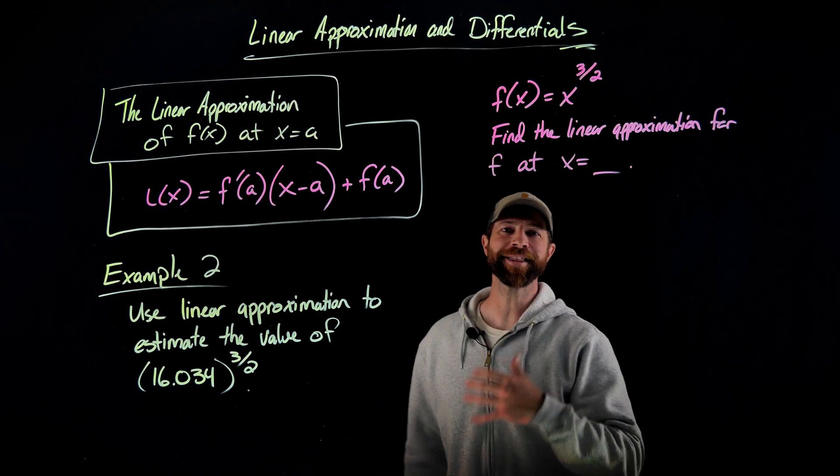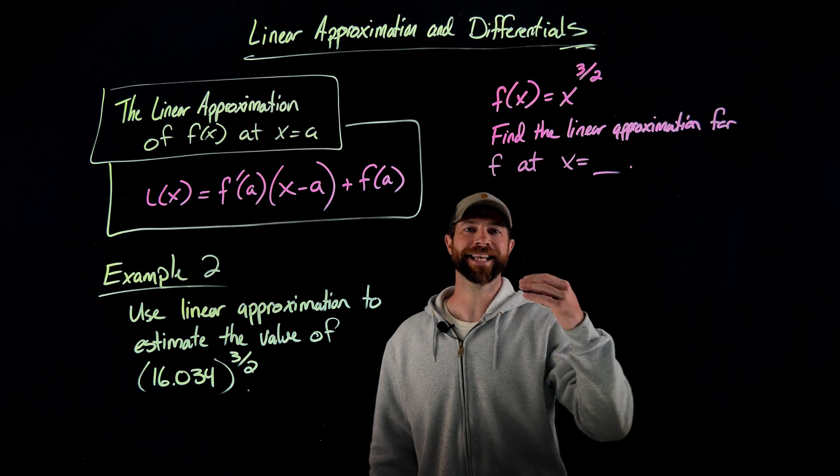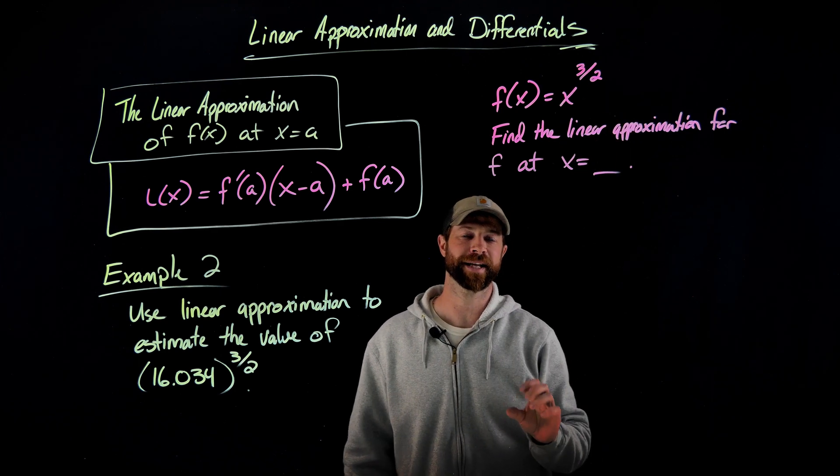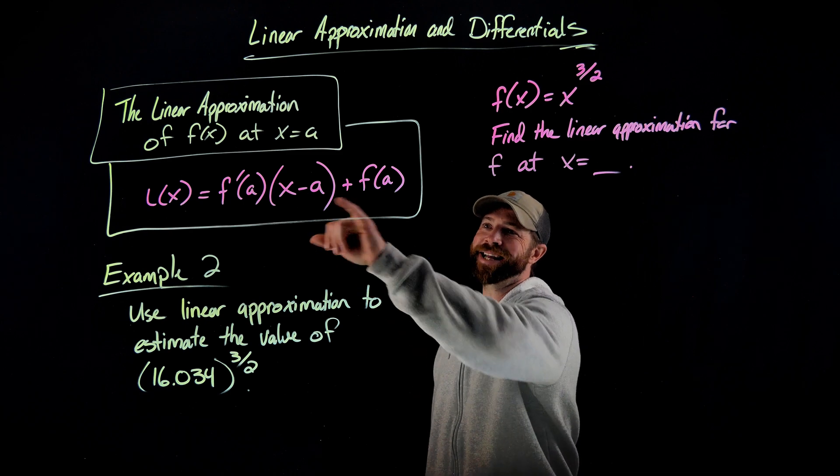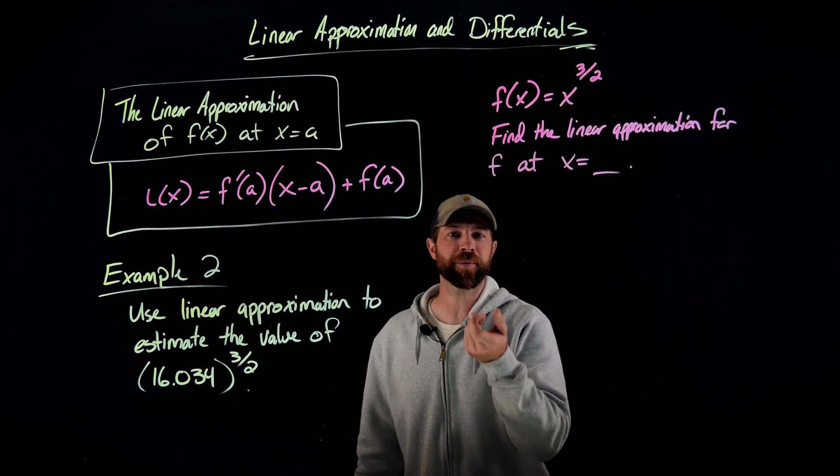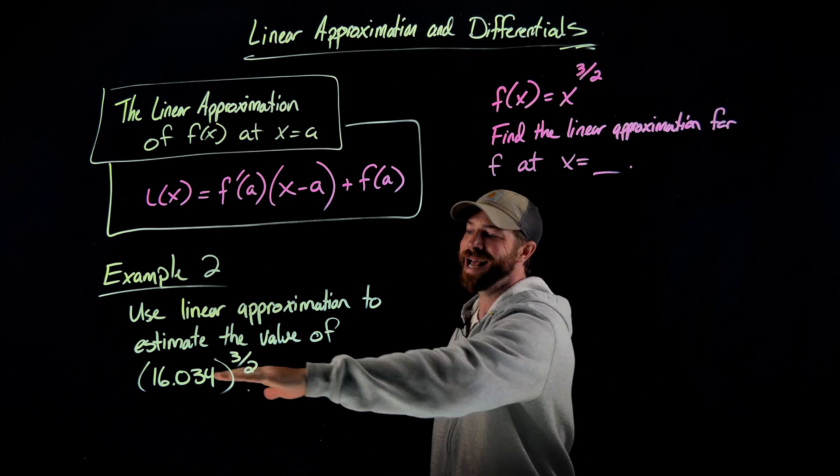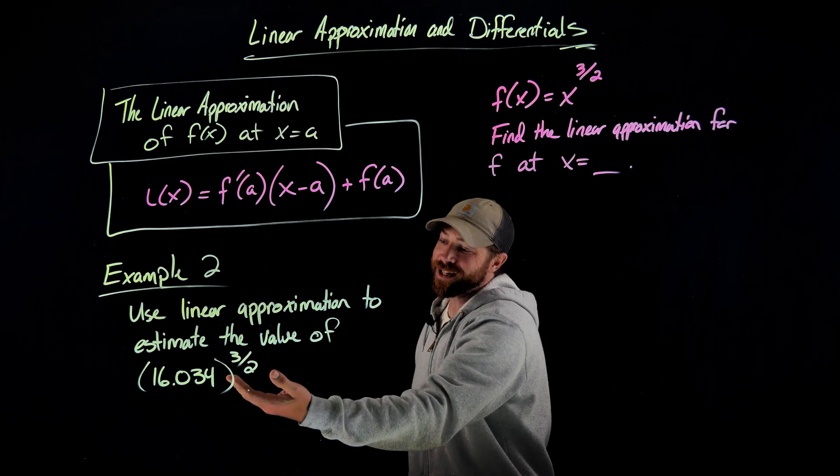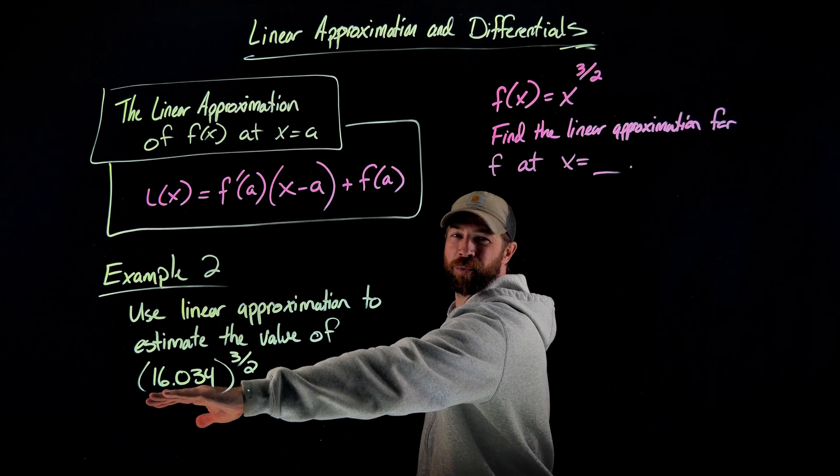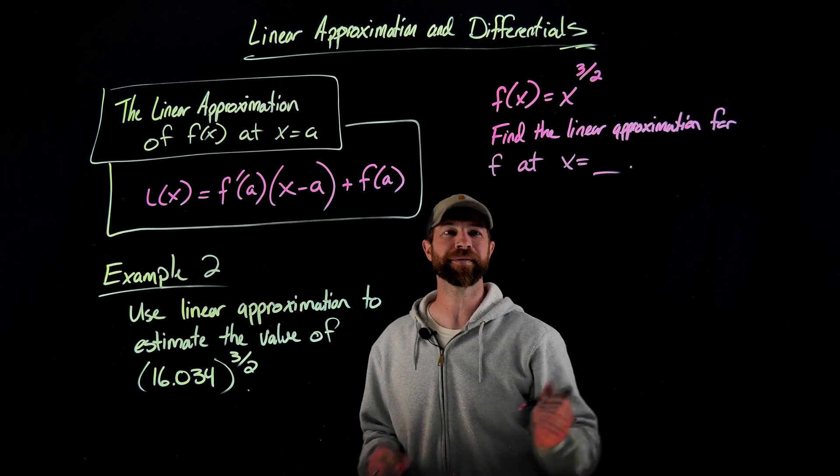So we've identified the function that we're estimating here, again x to the three halves, that's the tough operation right there. The next thing we need to do is identify this a value or this value that we're going to find the tangent line or the equation of the linear approximation near this value right here. It's pretty clear, at least to me, that the value that we would want to work with is the x value of 16.